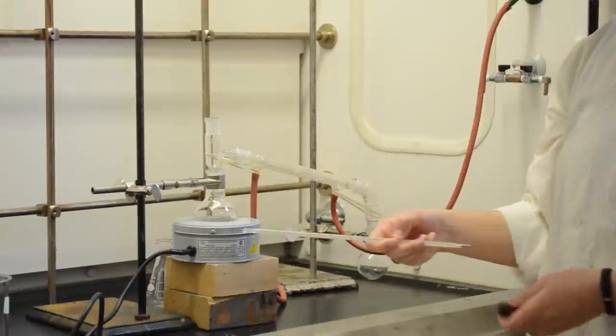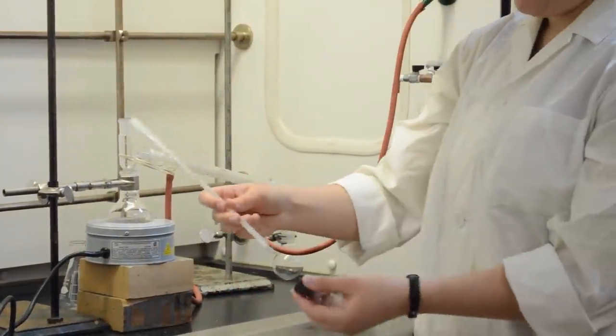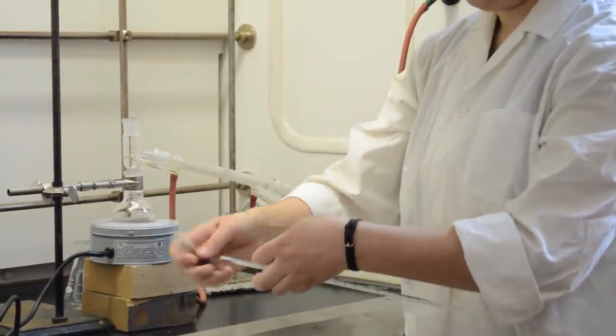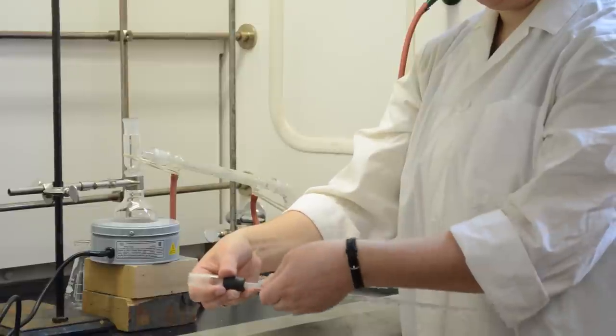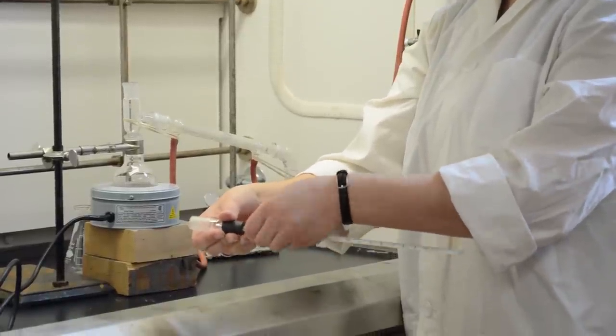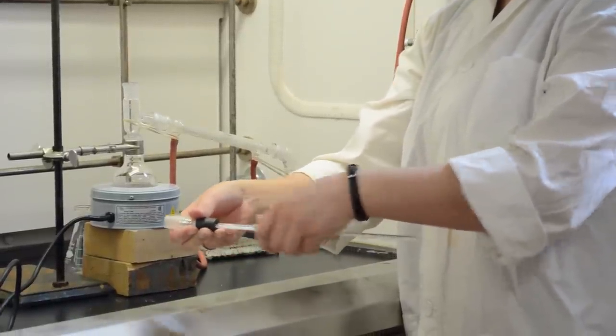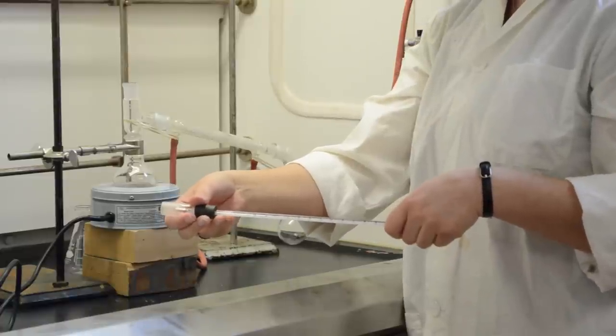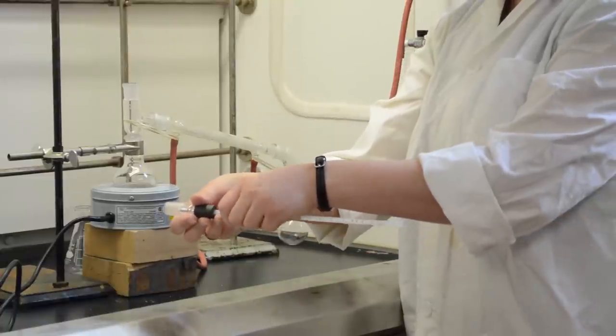The final step is to add a thermometer using a thermometer adapter. When putting the thermometer into the adapter, hold it very close to the adapter and use a gentle rotating motion. Don't hold from far away or else you risk breaking the thermometer and cutting your hand.